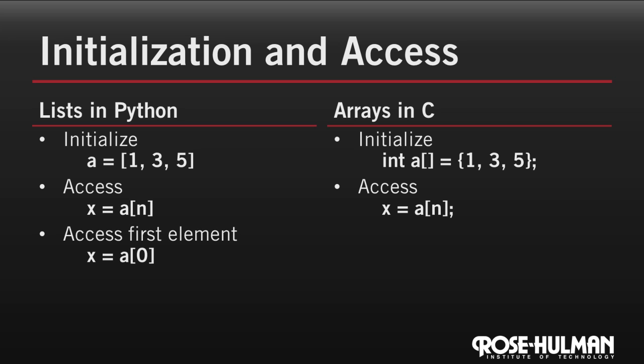To access the first element of a list in Python, we have to remember that lists in Python are zero indexed. So A bracket zero bracket is the first element of a list in Python. And it's exactly the same in C.